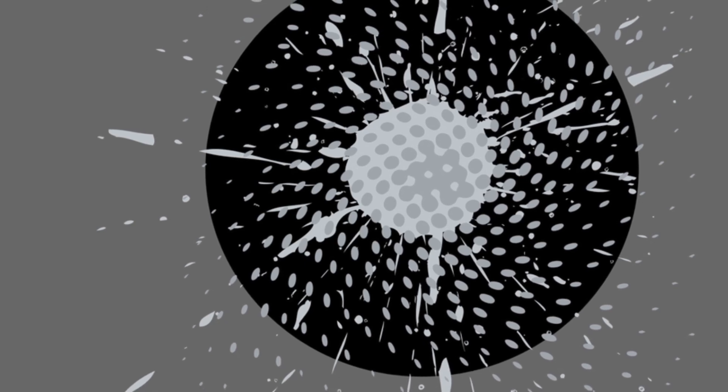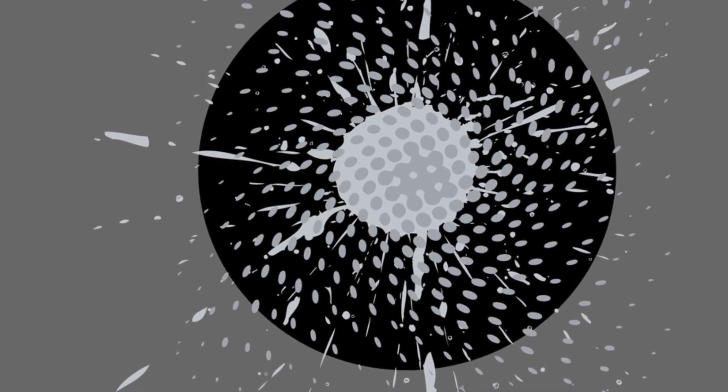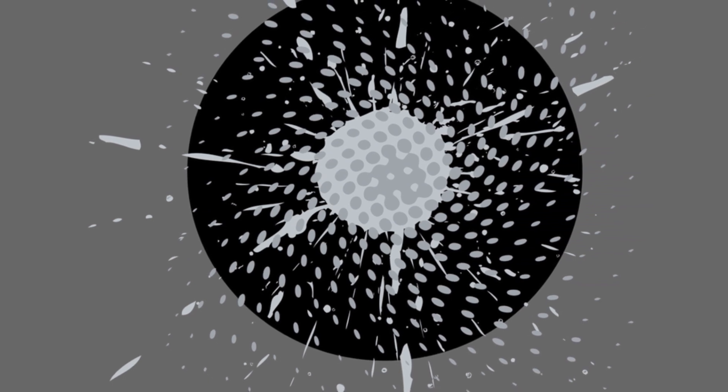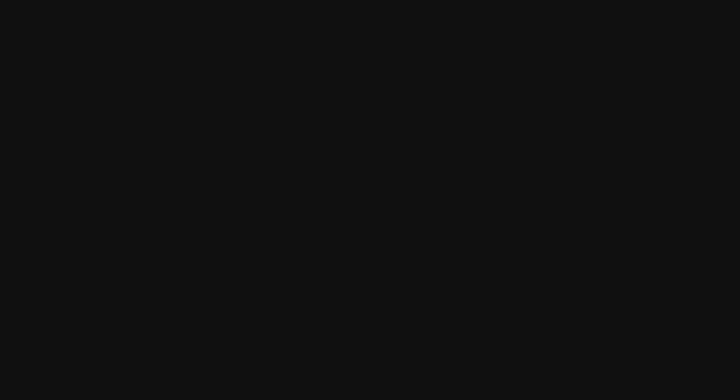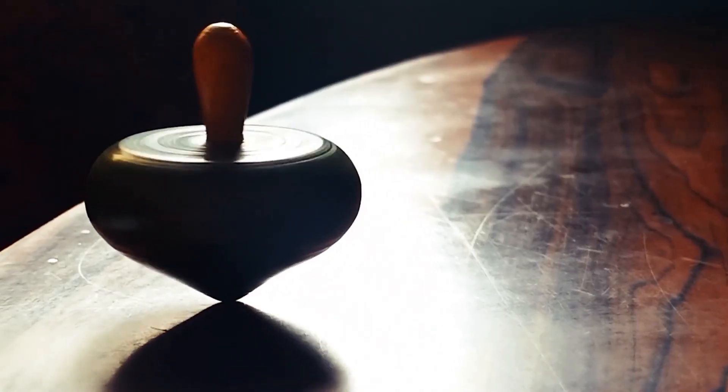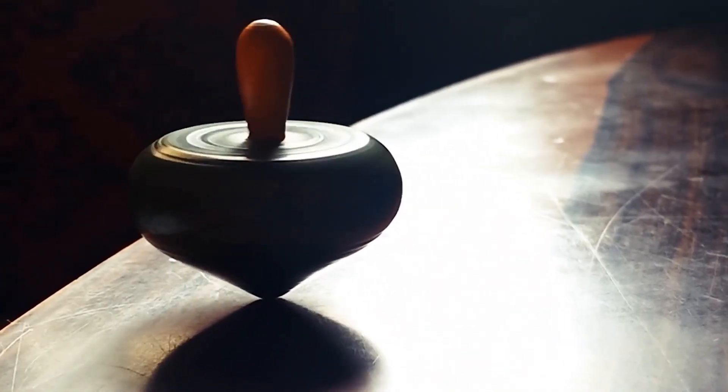The dark charge hypothesis challenges the traditional view of weak interactions as mediated by a separate fundamental force. Instead, it proposes that weak decays might be better understood as processes involving the disruption of equilibrium states within particles. Imagine a spinning top, perfectly balanced and spinning smoothly. Any disturbance to its equilibrium can cause it to wobble and eventually fall.